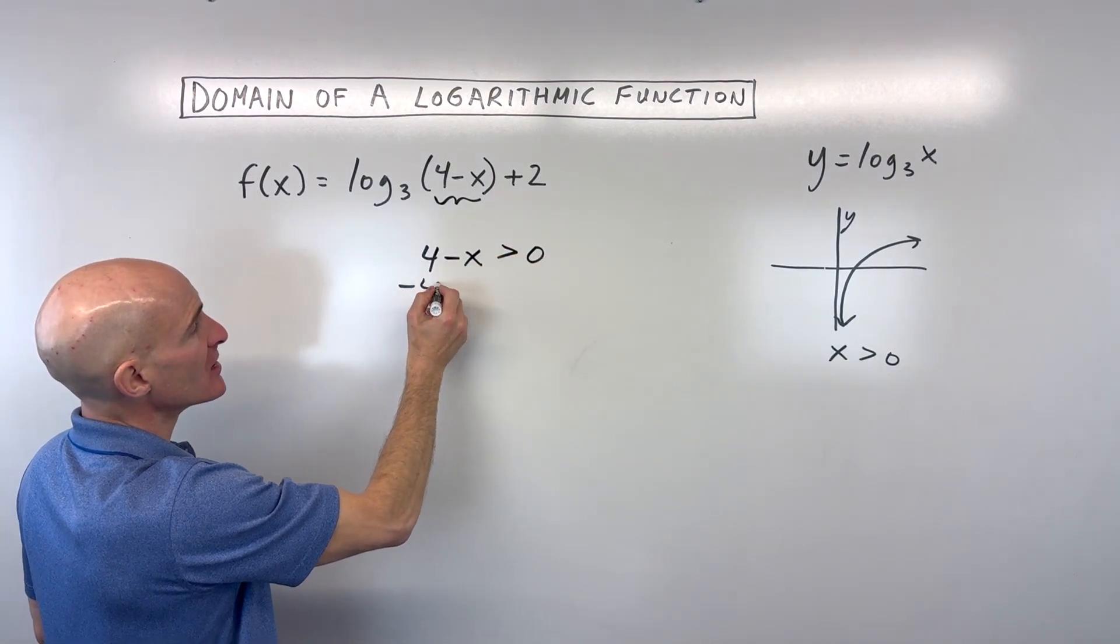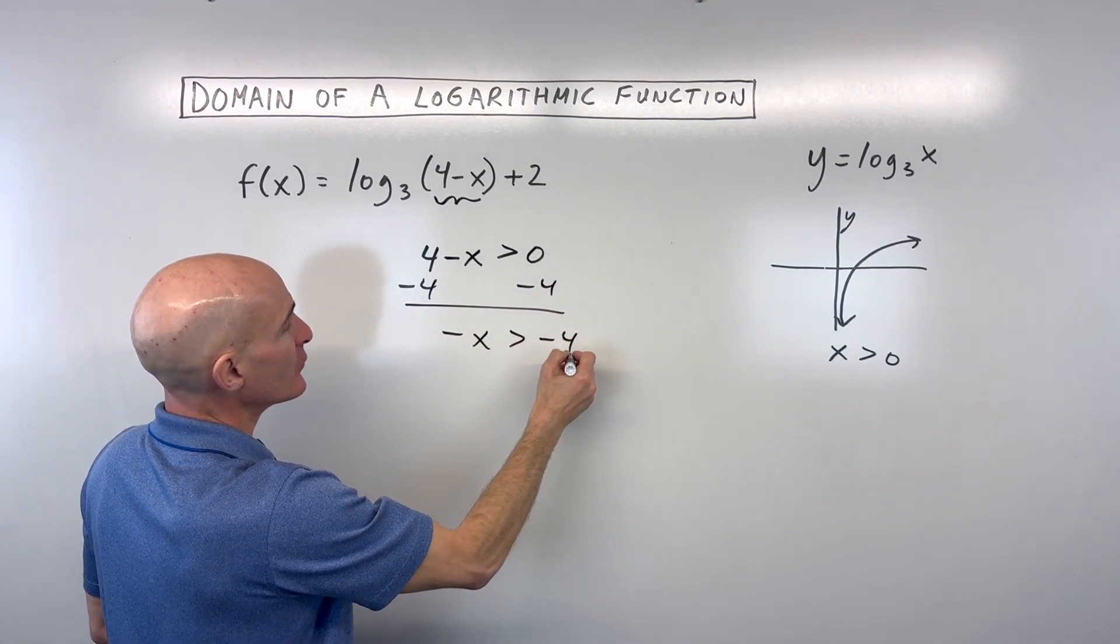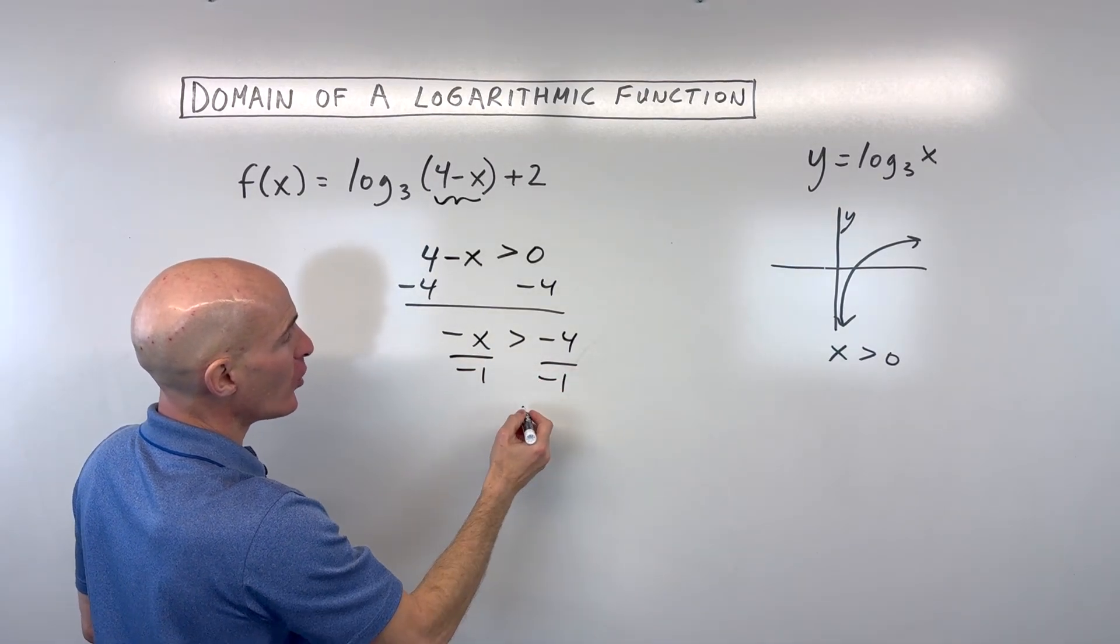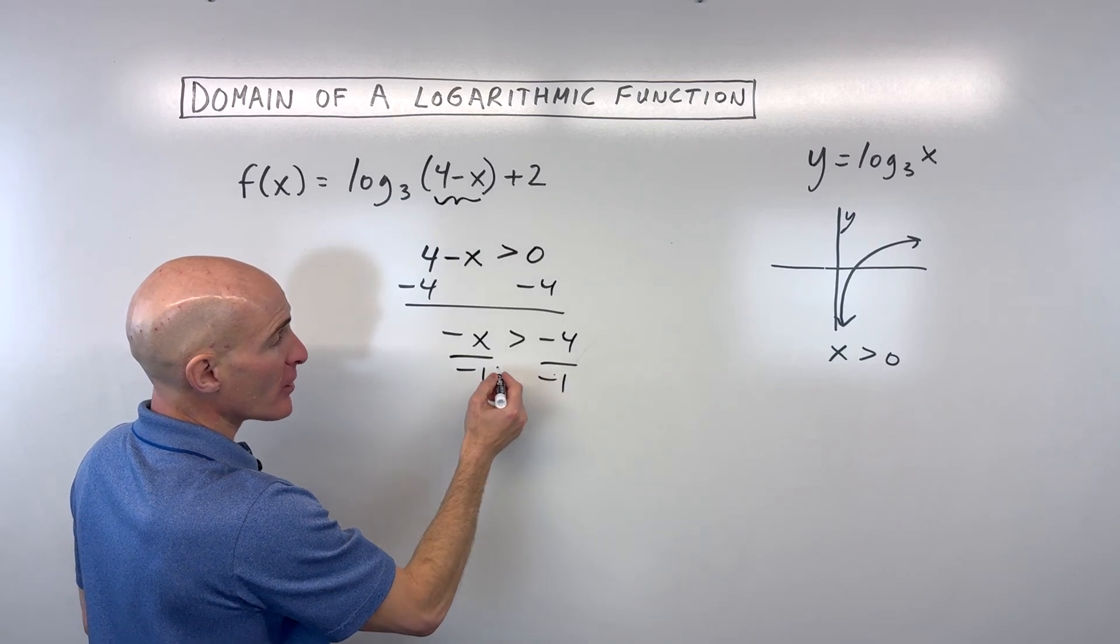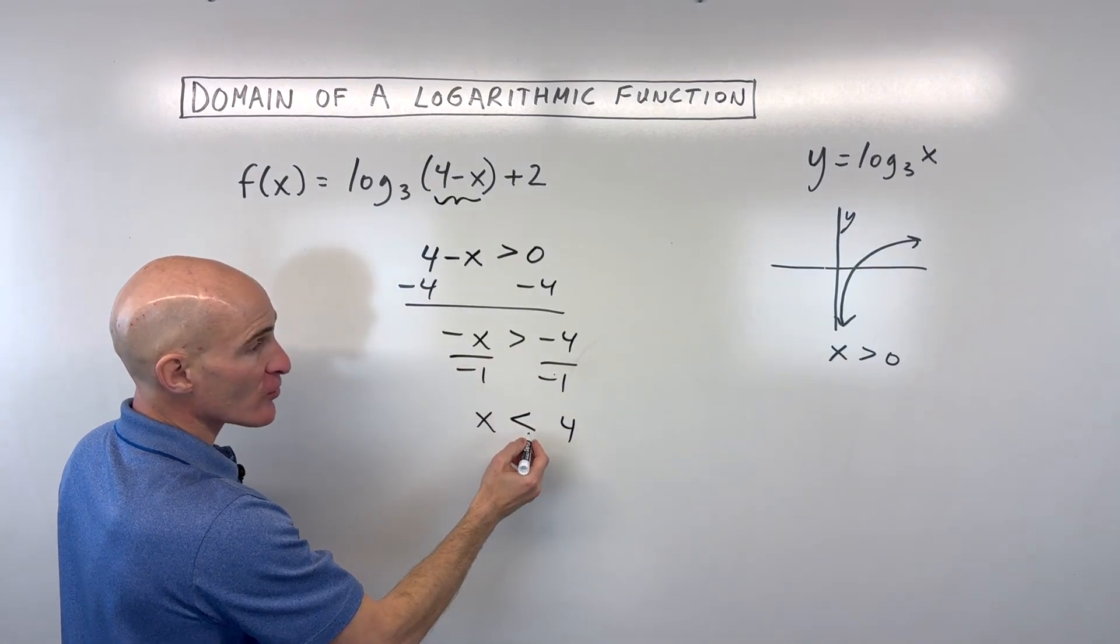So what we're going to do is just subtract 4 from both sides. We've got negative x is greater than negative 4. We want to solve just for 1x, so we're going to divide both sides by negative 1. Remember, when you multiply or divide both sides by a negative number, this inequality sign here changes direction.